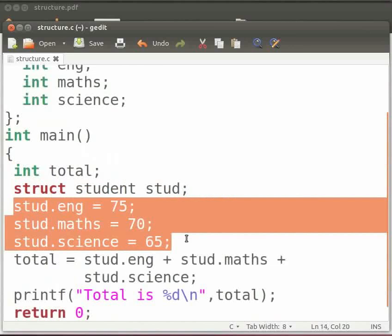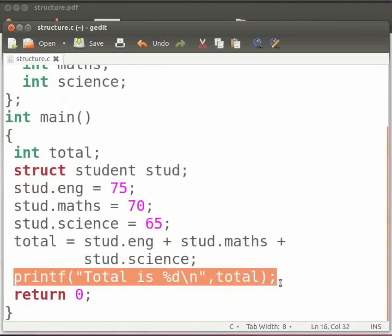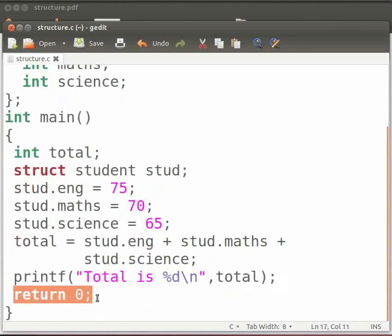Here we have modified the members by assigning them values as 75, 70 and 65. Here we calculate the total of three subjects. Then we print the result. This is our return statement.